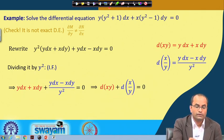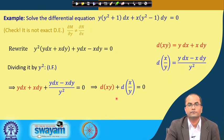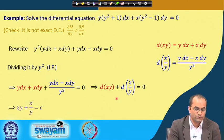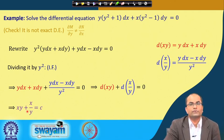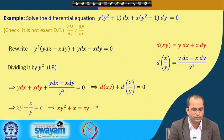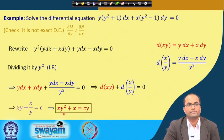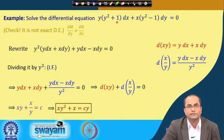Now we have the function F directly: though the equation was not exact, dividing by y² made it exact and we identified F = xy + x/y. Setting F equal to a constant gives the solution. Multiplying through by y, this can also be written as xy² + x = Cy, which is the solution of the given differential equation.